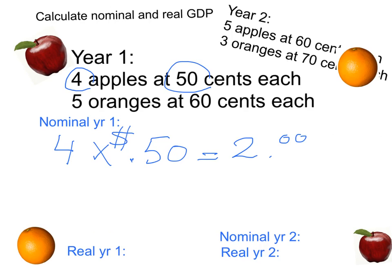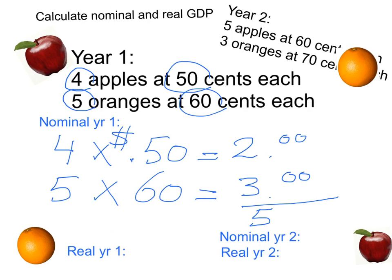And then you add the value of the oranges, so five times 60 cents. So the value of the oranges is $3. And if you add the value of the two together, $2 and $3, of course, is equal to $5. So the nominal GDP in year one equals $5.